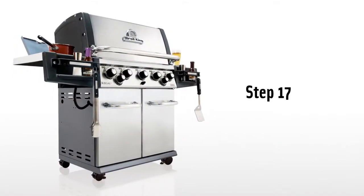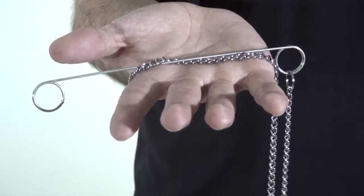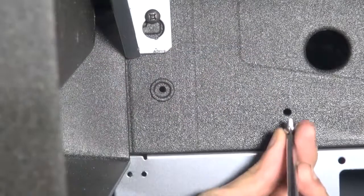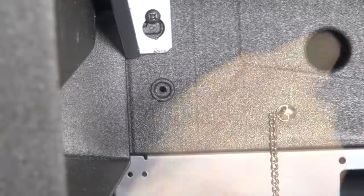Step 17. The match light assembly is an important safety feature on your grill. Attach it to the right hand side of the cook box using the screw provided.